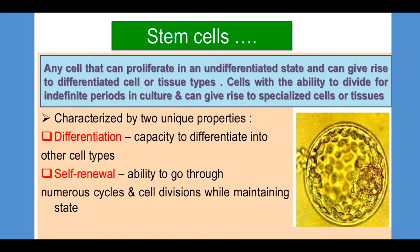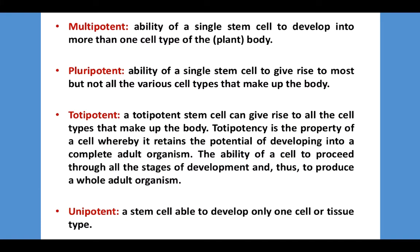Depending on the potential of the stem cells to differentiate into different types of cells, there are four types: multipotent, pluripotent, totipotent and unipotent. Multipotent is the ability of a single stem cell to develop into more than one cell type of the plant body. Pluripotent is the ability of a single stem cell to give rise to most but not all the various cell types that make up the body.